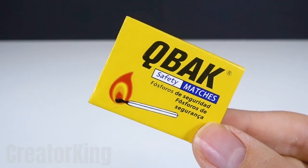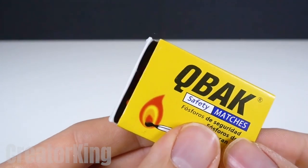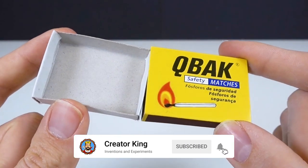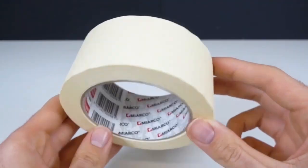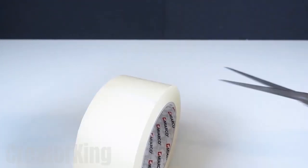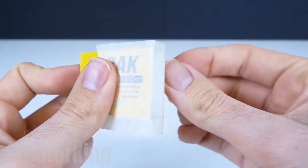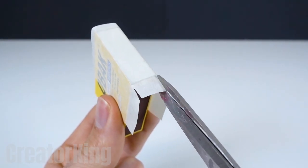Matches are also one of the objects my friends and I entertained ourselves with at parties. We would take one out of the box and press it against the scraper with our finger, then give it a strong blow with the other hand, causing the match to shoot out. The first one who managed to light it was proclaimed the king of the matches.